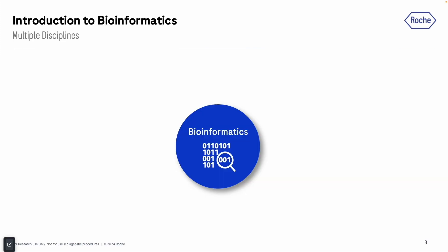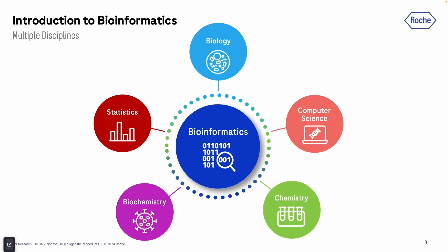The field of bioinformatics is complex and exciting. It spans multiple disciplines — as you see in this figure, the main field integrates biology and computer science, which involves analyzing contents of DNA, RNA, proteins, etc., and trying to understand complex biological systems. It also integrates statistics that can be used by programming tools to assess the significance of a metric or even create a new tool, integrating computer science, statistics, and math. It also encompasses biochemistry and chemistry, where we can do in silico drug discovery using bioinformatics.